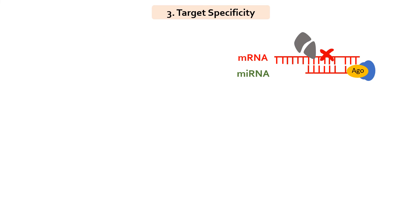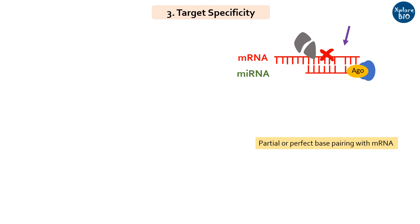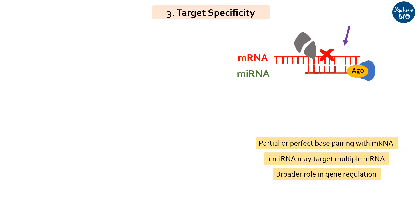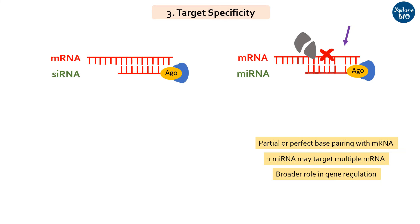Regarding target specificity: miRNA can interact with mRNA through partial complementarity and therefore can interact with multiple mRNA targets. As a result, one miRNA can alter the expression of multiple genes in a network. Thus, miRNA has a broader regulatory role in an organism.